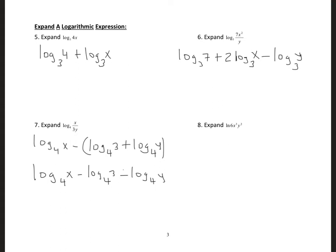Now the next one uses natural logarithm. This is going to be natural log of 6 plus — using the power property — 3 times natural log of x, plus 2 times natural log of y.